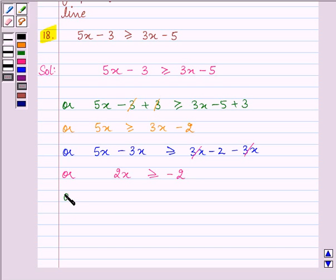Dividing both the sides by a positive number that is 2, we have 2x divided by 2 is greater than or equal to minus 2 by 2. Which on simplification, gives us x is greater than or equal to minus 1.